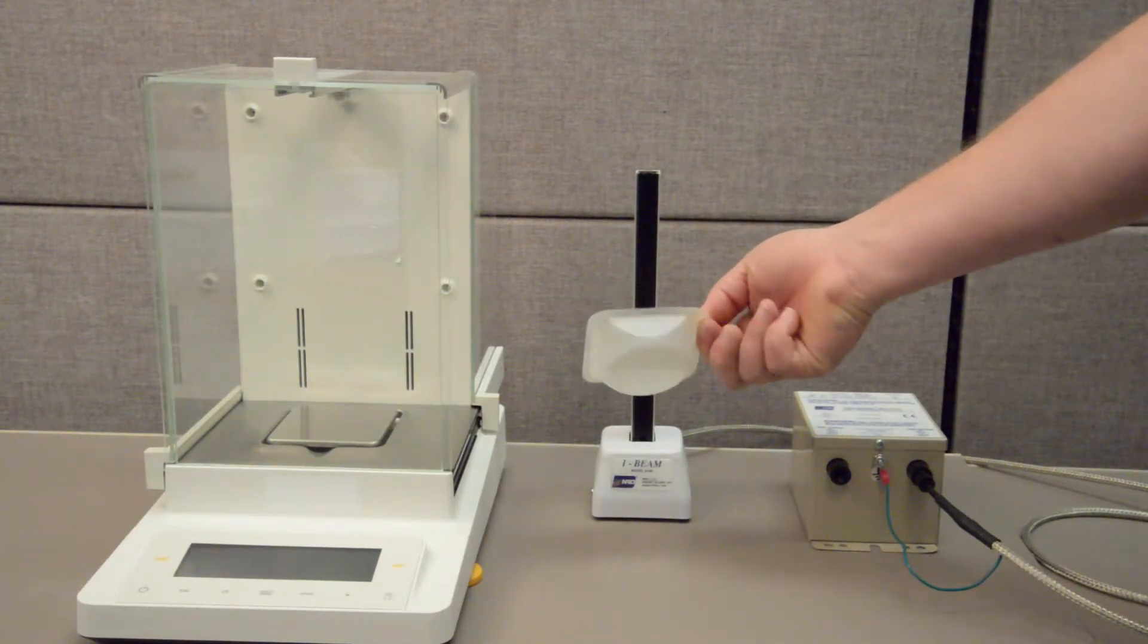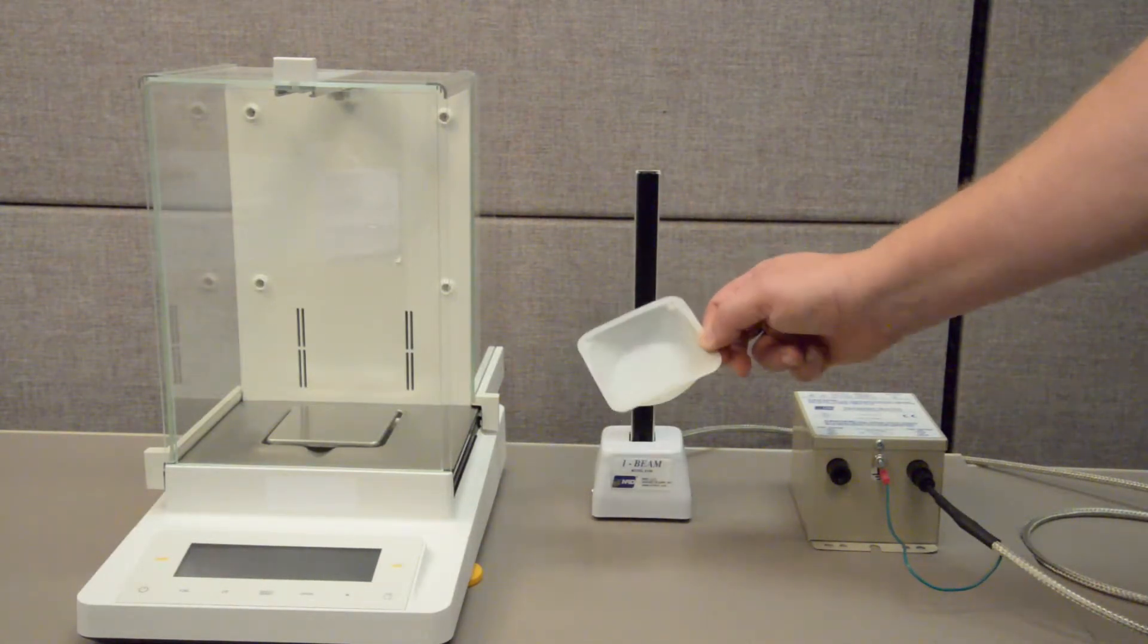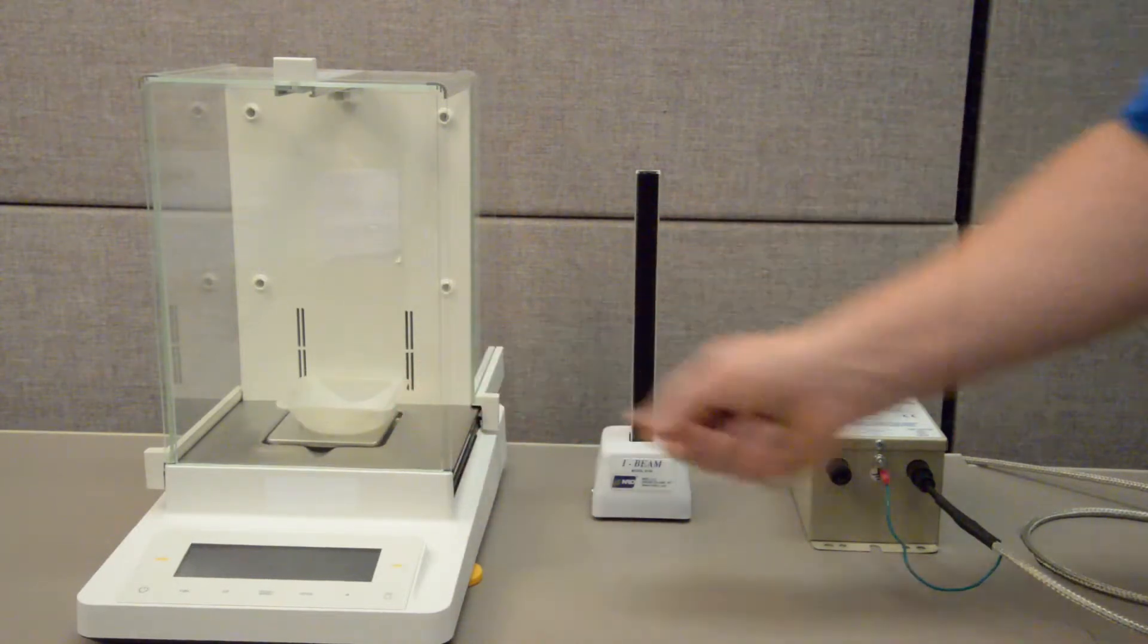It can be used to remove static from weigh boats. Just hold the boat in front of the I-beam for a moment before placing it into the weigh chamber.